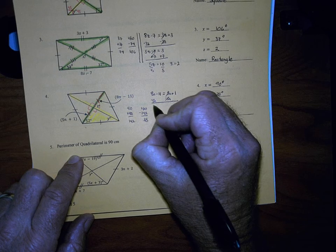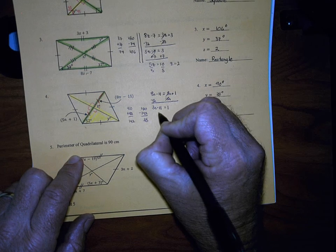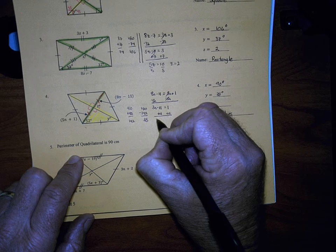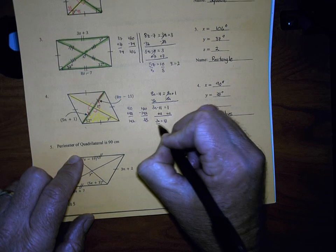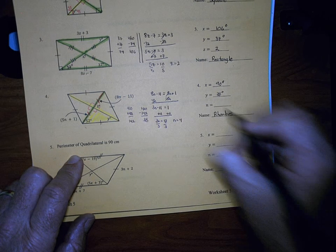Subtract 5N from both sides. 3N minus 11 is equal to 1. Add 11 to both sides. 3N would be equal to 12. Then I would divide both sides by 3. Therefore, N would be equal to 4.